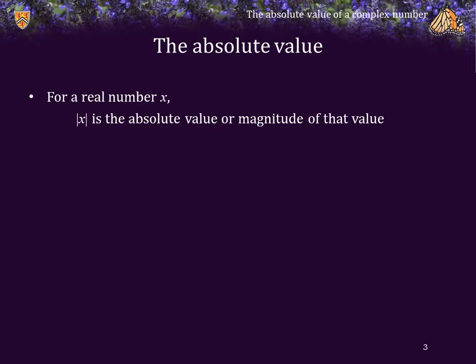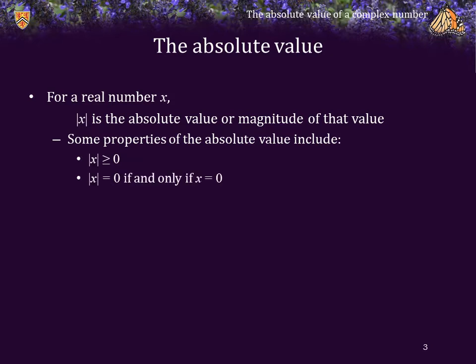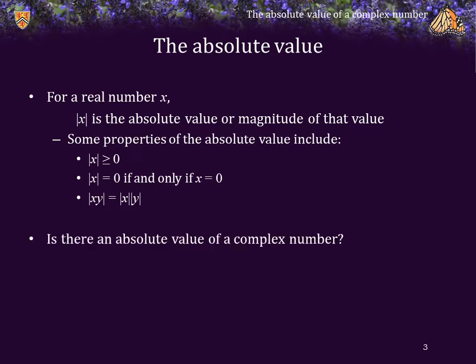For a real number x, this notation represents the absolute value, or magnitude, of that value. Some properties of the absolute value include: the absolute value is greater than or equal to 0, and the absolute value of x is equal to 0 if and only if x is equal to 0. Also, the absolute value of a product is the product of the absolute values.